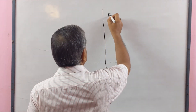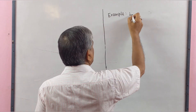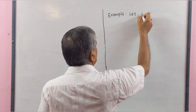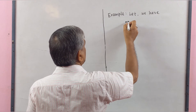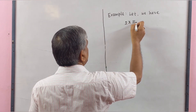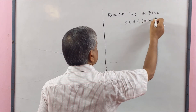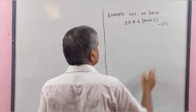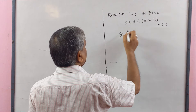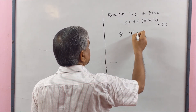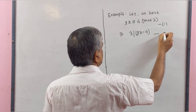Example: Let 2X ≡ 4 (mod 3). This means 3 divides 2X − 4.